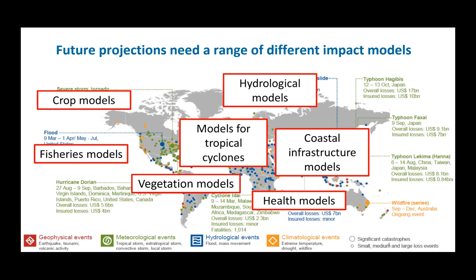To do so already needs more than one model. If you're just interested in climate change, you can use one model as long as you're not interested in uncertainties. But to provide even just one such map, you need different models: hydrological models to describe flood events, vegetation models to describe wildfires, and crop models to describe crop failure due to heat waves or droughts, and many others.